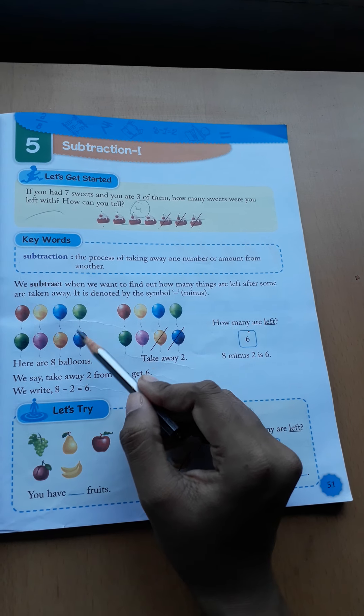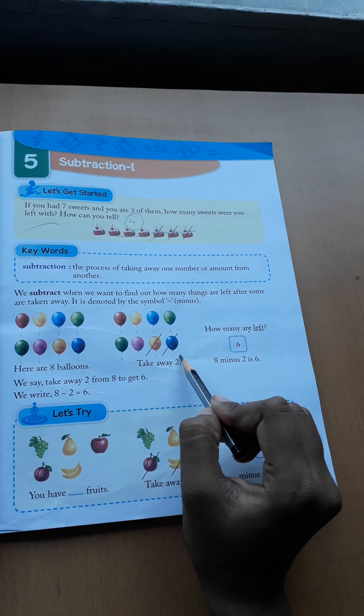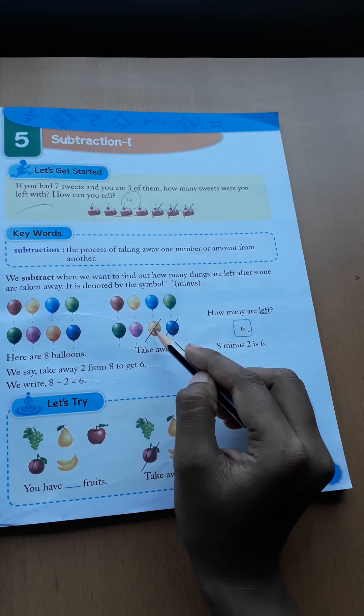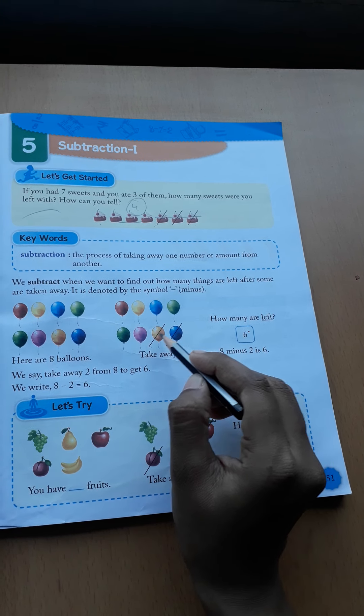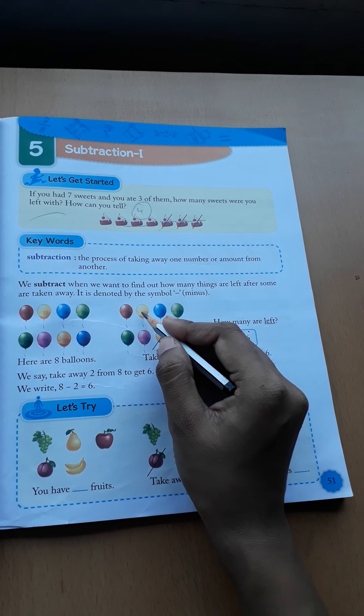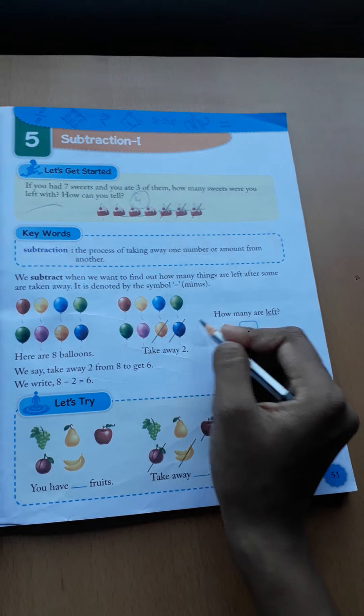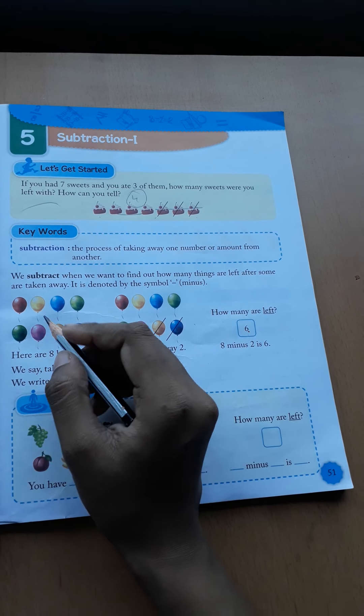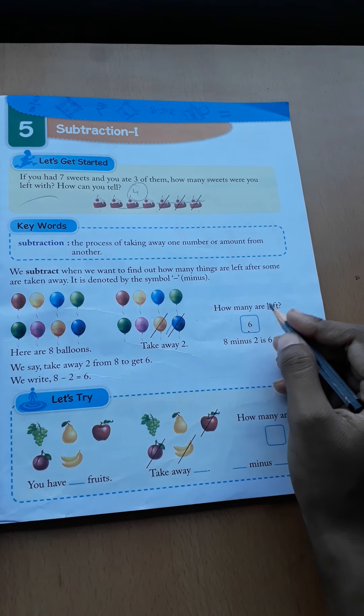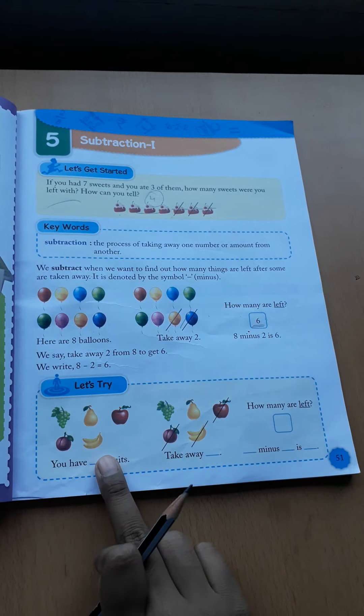Here are eight balloons, and we take away two - take away means lena. So we take out of these eight balloons, we take two balloons. Now how many left here? Six. Now we will count, one, two, three, four, five, six. Yes, eight balloons, we take two balloons, so we are left with eight.